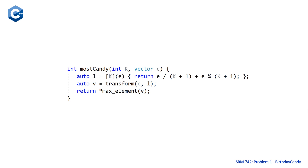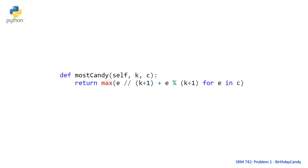Moving on to the Python solution — as usual, the most concise. We use list comprehension and the max function: for each element e in the candy list, we compute e//(K+1) + e%(K+1), using double backslash for integer division in Python, then apply max to the result. All three solutions work correctly. The time complexity is O(n), linear in the number of elements in the candy list.